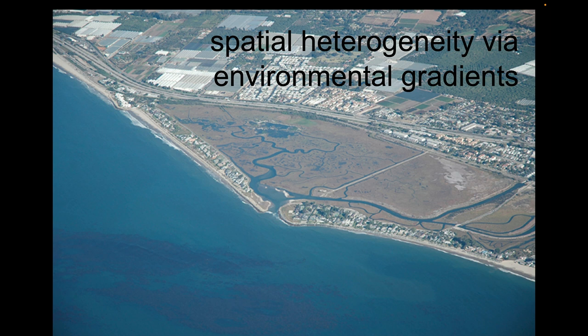Here is a nice example from the Carpinteria Salt Marsh in extreme southern Santa Barbara County. We see these tidal channels: freshwater is coming in from land sources, while ocean water is coming into the estuary from the mouth. This end is very salty, while the far end is very fresh, and in between there is a mixing zone.